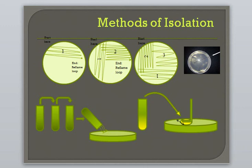In the pour plate method, a serial dilution method is used by diluting the specimen with each subsequent tube of broth. These tubes are then poured into a petri dish and allowed to cool so the agar will solidify. Colonies will grow throughout and on top of the media.